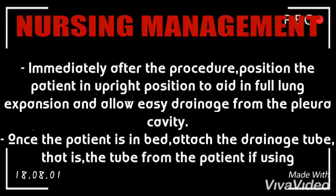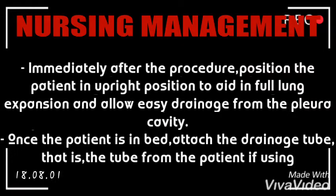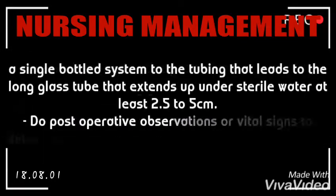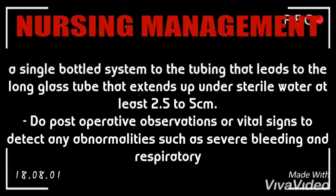Nursing management of a patient with underwater seal drainage: immediately after the procedure, position the patient in an upright position to aid in full lung expansion and allow easy drainage from the pleural cavity. Once the patient is in bed, attach the drainage tube from the patient — if using a single bottle system — to the tubing that leads to the long glass tube that ends under sterile water, at least 2.5 to 5 centimeters.